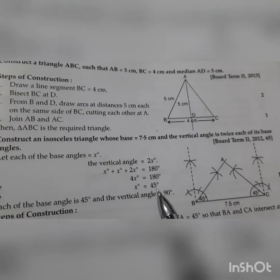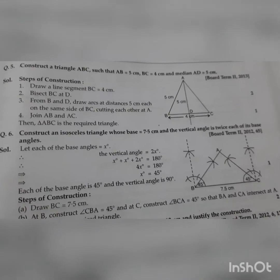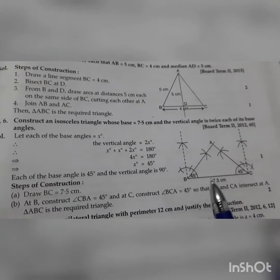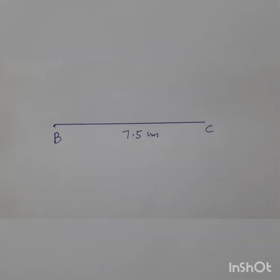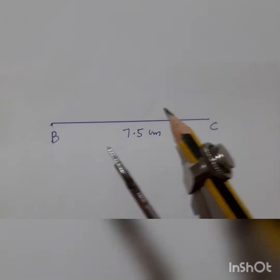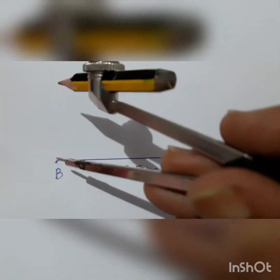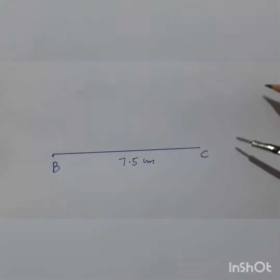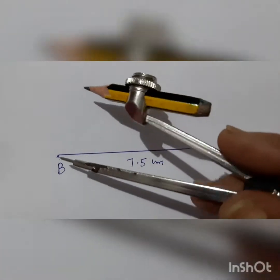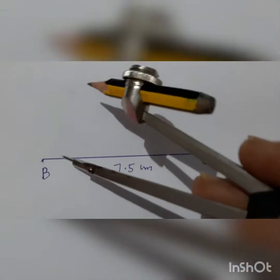Now we have to construct the isosceles triangle. First, we calculate all the angles, then do the construction. We draw line BC equal to 7.5 centimeters. Then we have to draw 90 degrees from both ends and bisect those 90 degrees — only then we will get 45 degrees, which is the value of x.